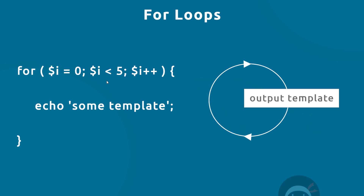The second statement is the condition for which we want to cycle through the loop — while this condition is true, we continue to loop through this code. In this case, while the variable i is less than five, we keep cycling through and echo out some template. The third bit of code says: each time this code fires, take the counter variable i and add one to it.